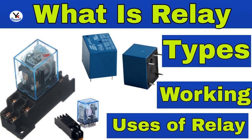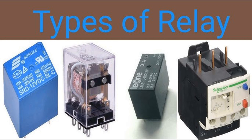Working principle: When the input signal is applied to the SSR's input circuit, it powers an LED within the optical isolator. The LED emits light that activates the photosensitive semiconductor, such as a phototransistor or photothyristor, on the output side. This output semiconductor component then closes the circuit, allowing current to flow through the load. When the input signal is removed, the LED turns off, the photosensitive element stops conducting, and the relay returns to its original state, disconnecting the load.